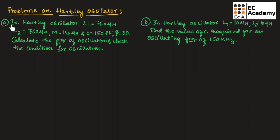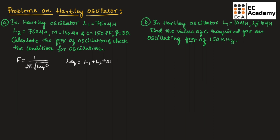Let us consider the first problem. Here we need to calculate the frequency of oscillation and also we need to check the condition for oscillation. The frequency of oscillation of Hartley oscillator can be given as f = 1 / (2π √(L_eq × C)). Here L_eq can be given as L1 + L2 + 2M when mutual inductance is given. If the mutual inductance is not given, L_eq will be equal to L1 + L2.